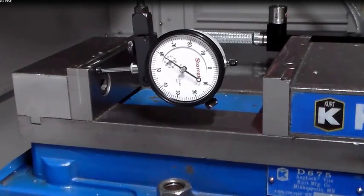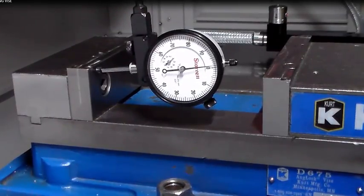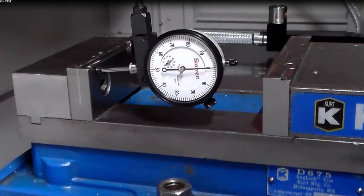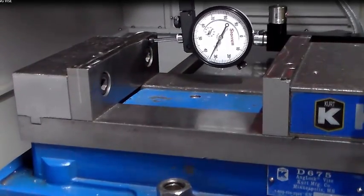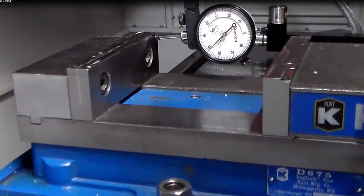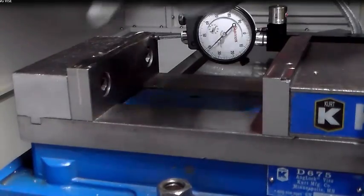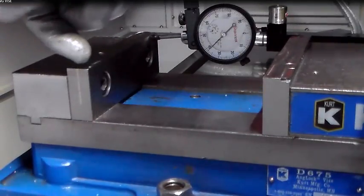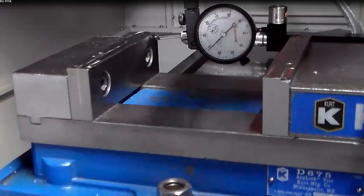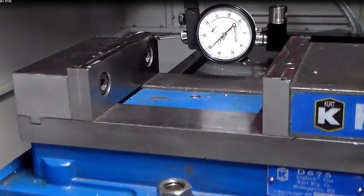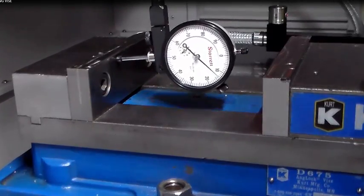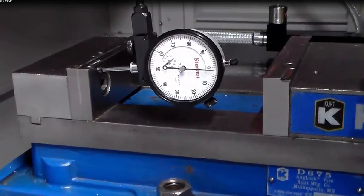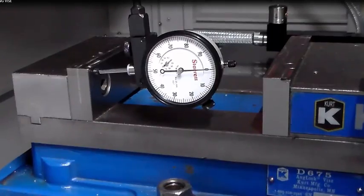The first thing we want to do is make sure that the solid jaw of this vise is in line with the x-axis. We're going to indicate it from one end to the other and see how much taper we're getting. That looks like about 38 thousandths, so this end is going to come towards me. Let's move the indicator back to this corner and put it back to zero.